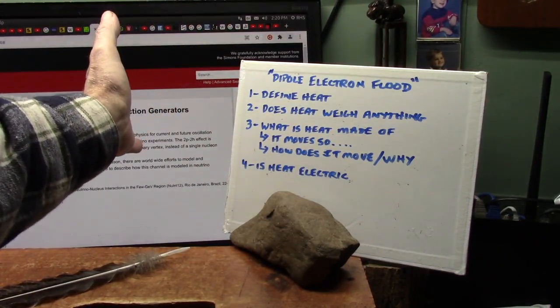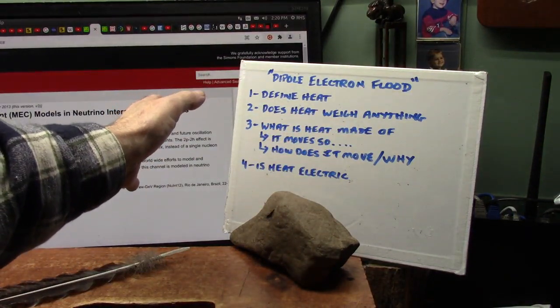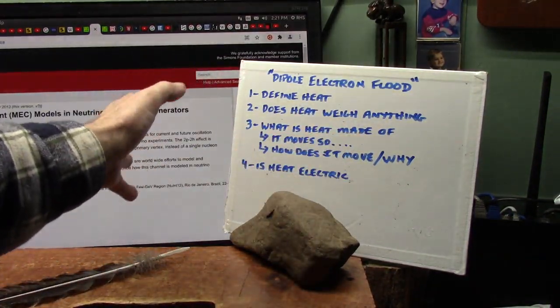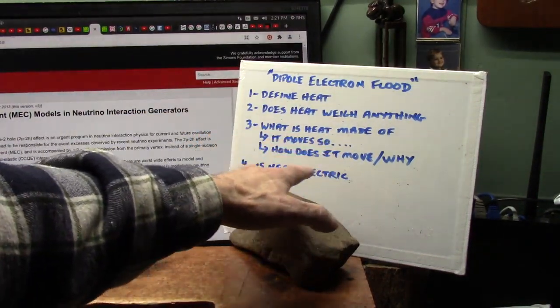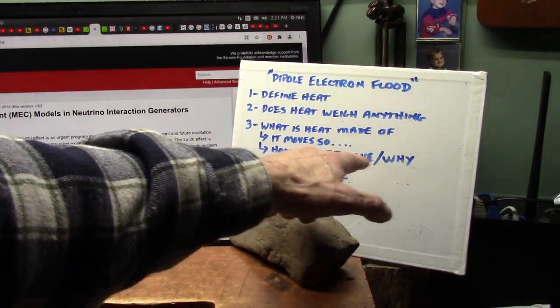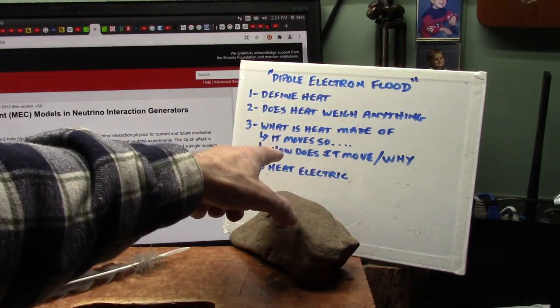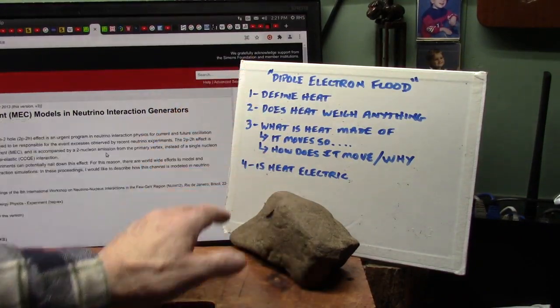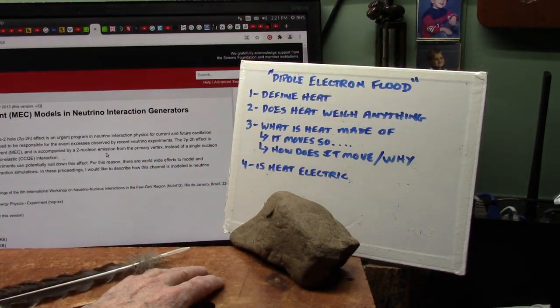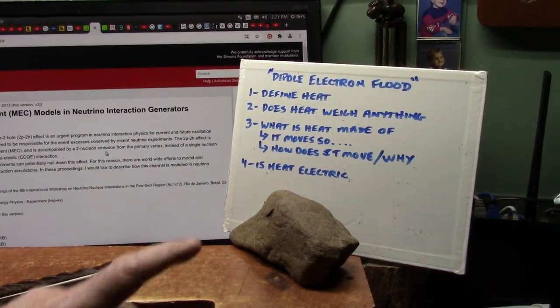What is heat? You know, you get it's warm. That's nice. Does heat weigh anything? Well, I can tell you it does weigh something. What is heat made of? I know what it's made of, too. How does it move? What makes it move? How does it move and why? It moves, so it has to be made of something. Is heat electric? I can tell you something else. Everything there is is electric. There is nothing that isn't a dipole. So we're going to start with all that.